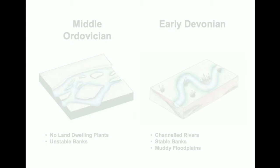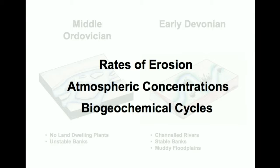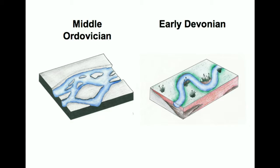Rates of erosion, atmospheric concentrations of carbon dioxide and oxygen, and biogeochemical cycles were all impacted, and as a result of these changes the climatic feedback was extensive.